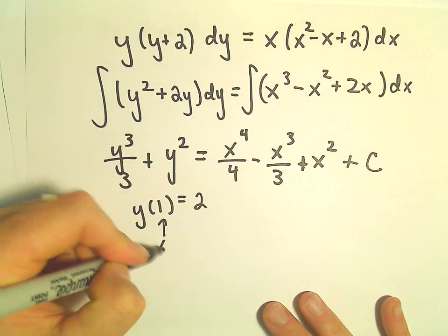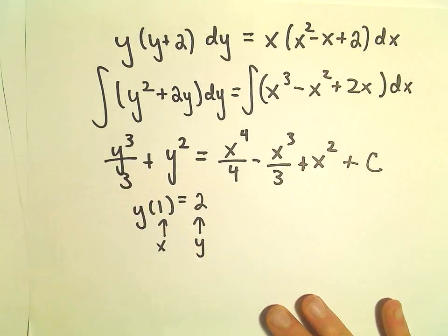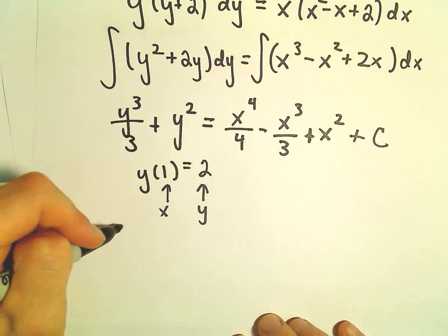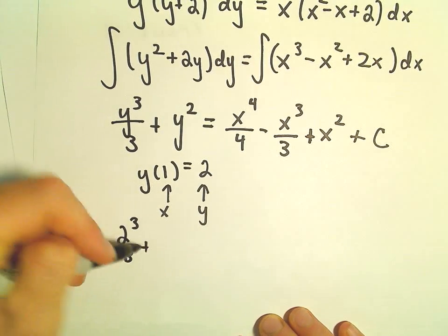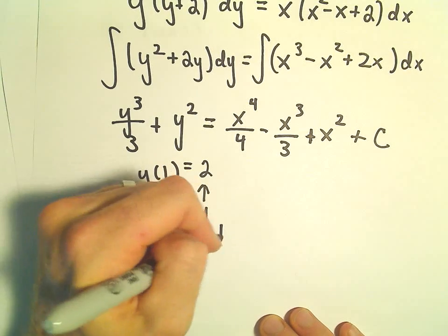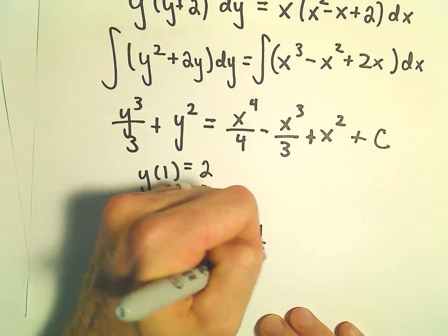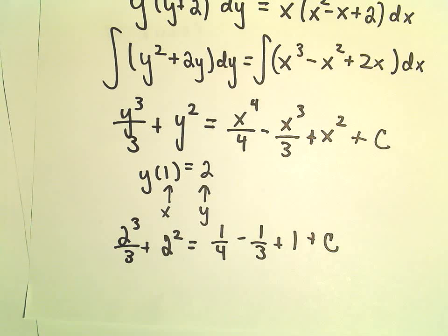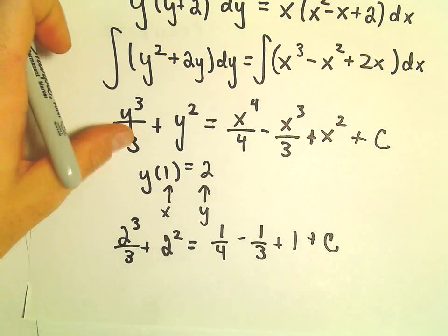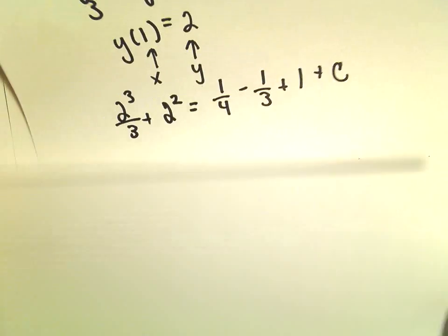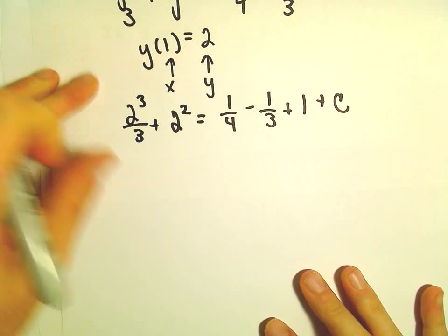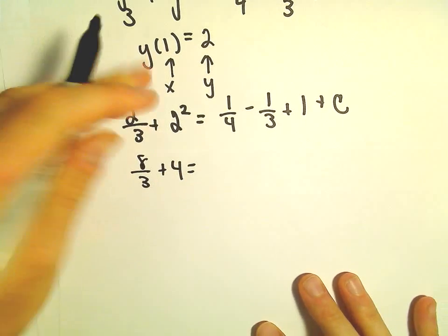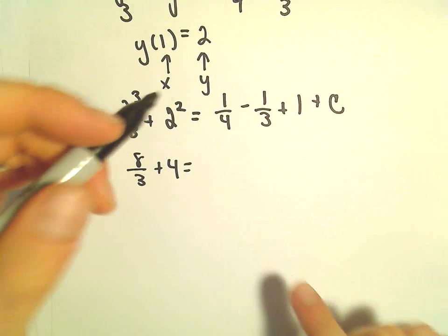So again, this is going to be our x value. This will be our y value. So, let's see. It will have 2³/3 plus 2² on the left. On the right, we'll have 1/4 minus 1/3 plus 1 plus c. Now, it's just fun arithmetic solving for c.